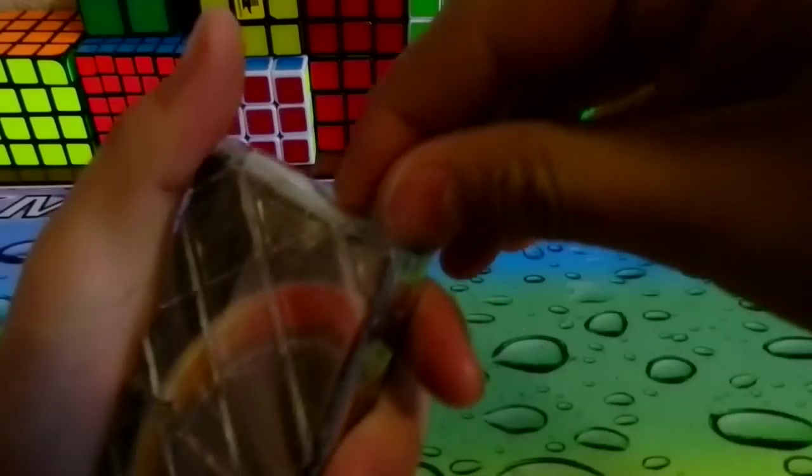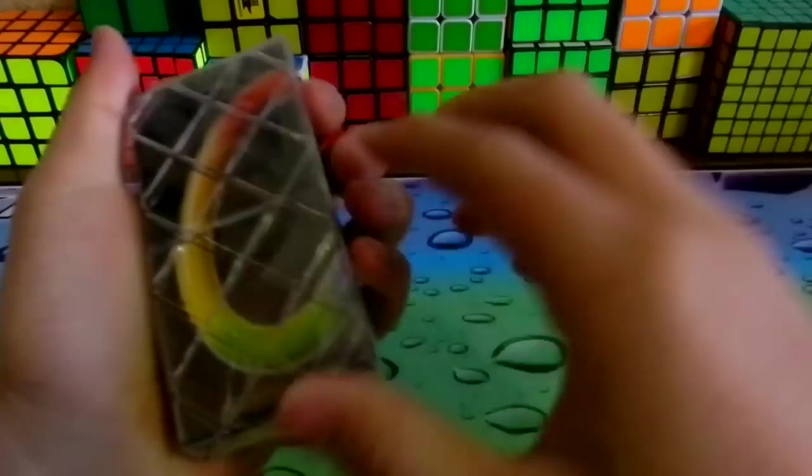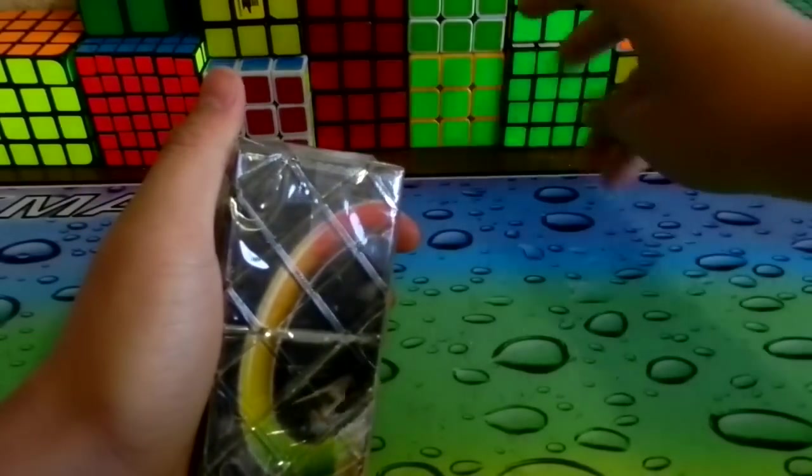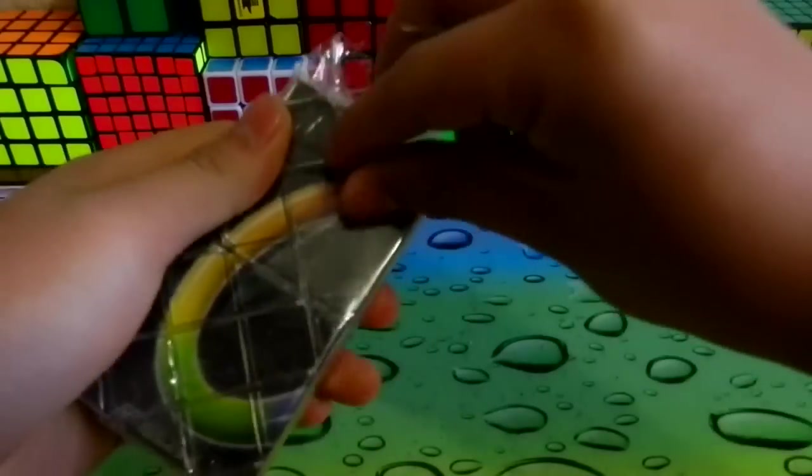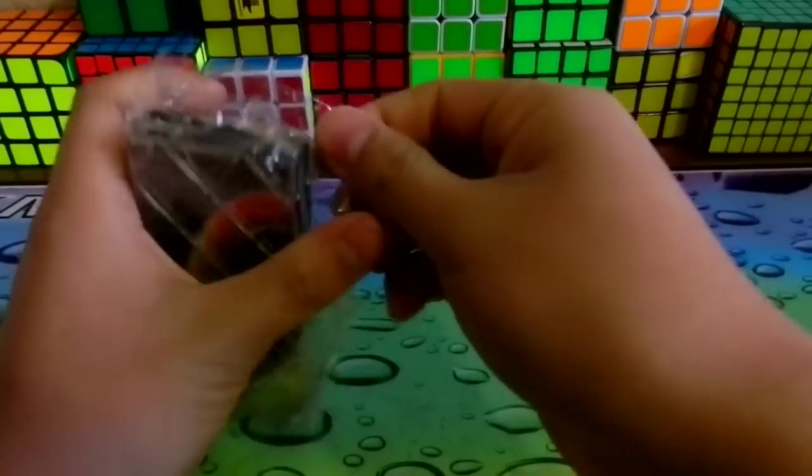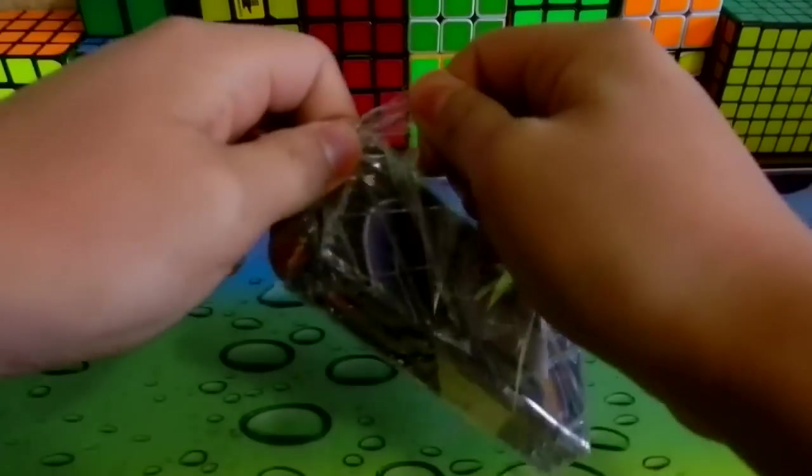So here's the cable that plugs into my Speed Stacks. I'll be doing an average of five with this cable now and that would be great. So here is the Cube Twist. Wow, it's actually pretty big. Didn't know, didn't expect it to be this big. How do you open this thing? I'm just going to rip it off.